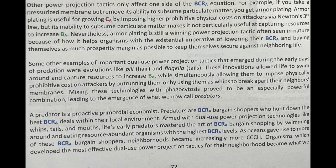Some other examples of important dual-use power projection tactics that emerged during the early days of predation were evolutions like filia, hair, and flagella — tails. These innovations allowed life to swim around and capture resources to increase BA, while simultaneously allowing them to impose physically prohibitive costs on attackers by outrunning them or by using them as whips to break apart their neighbor's membranes. Mixing these technologies with phagocytosis proved to be an especially powerful combination, leading to the emergence of what we now call predators.